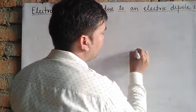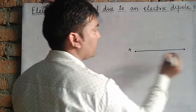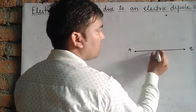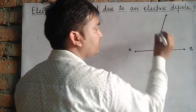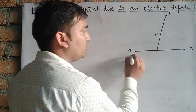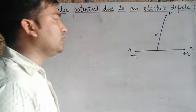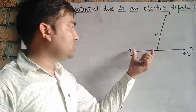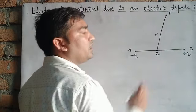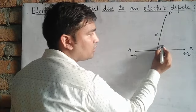Consider an electric dipole having length 2L. Point P is at distance R from the center of the dipole, where the electrostatic potential is to be found. This is the negative charge at end A, and this is the positive charge at end B. This is dipole AB with center O. P is the point where electrostatic potential should be found, and theta is the inclination from the axis of the dipole.